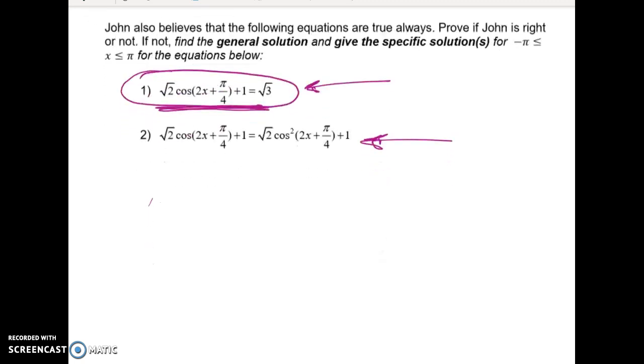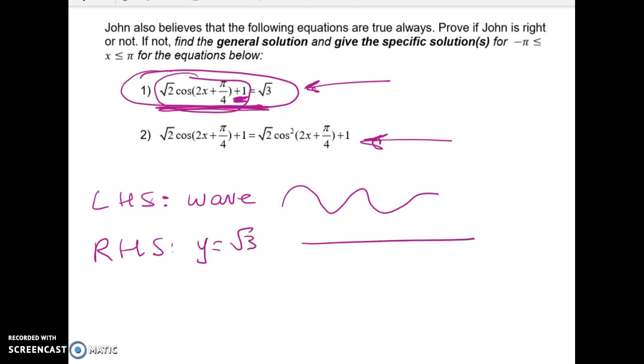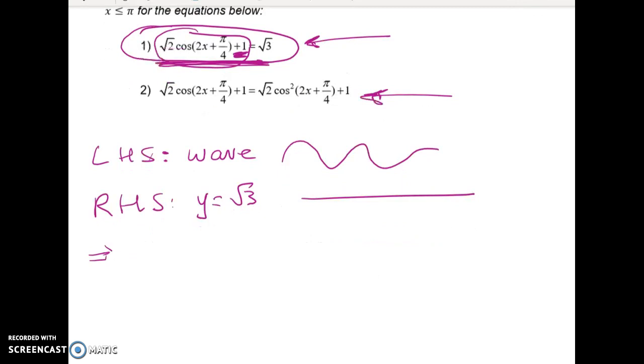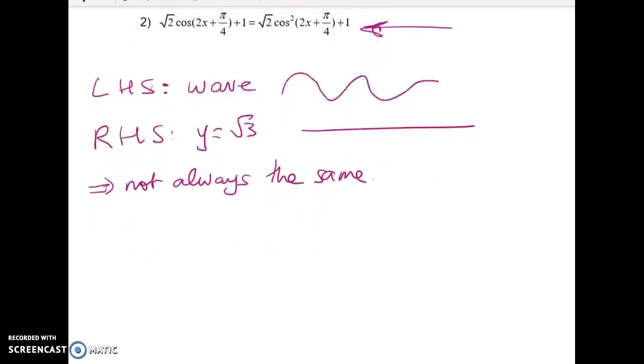Well graphically, let's have a look at what we've got. On the left hand side we've got a wave, right? This is a cosine function, and it's got one added to it so it's been shifted up, but it's still going to be a cosine function, just a cosine function that's been transformed. On the right hand side we've got the function y equals root 3, so that's just a horizontal line. So those two things can't always be the same. They're not always the same, but maybe sometimes they're the same, and that's what we mean by solving an equation.